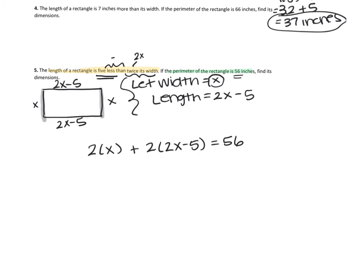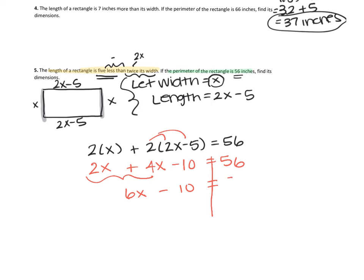So if we clean this up, it's going to be two X plus — distribute the two — that would make four X minus 10, equals 56. Combine like terms: two X and four X makes six X. So six X minus 10 equals 56. Add 10 to both sides, and you get six X equals 66. Divide by six, and we get X equals 11.